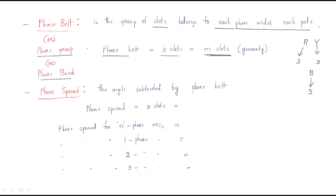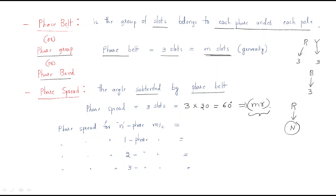Next is phase spread — the angle subtended by each phase belt. For R-phase in the north pole, the phase belt consists of three slots. The slot angle is 20 degrees. So the phase spread = m × γ = 3 × 20 = 60 degrees. Phase spread is generally represented as m·γ.